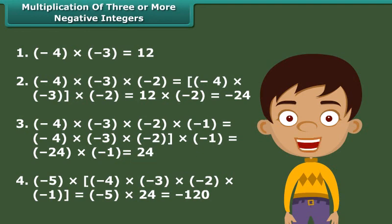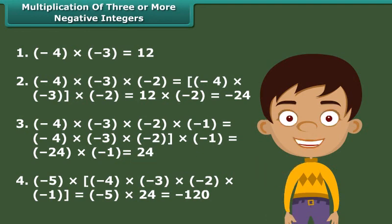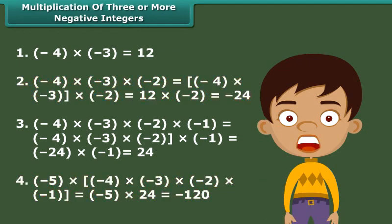And the number of negative integers that are multiplied in the second and fourth examples are odd, and the products obtained in those cases are negative integers.